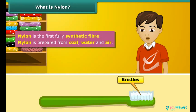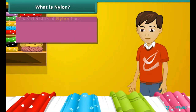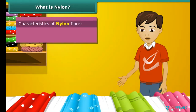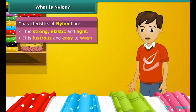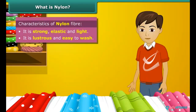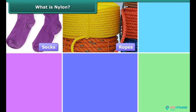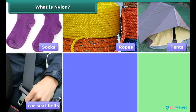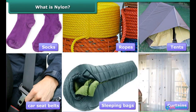Can you think why nylon is so popular for making clothes? Nylon fiber is strong, elastic, light, lustrous and easy to wash. It is used in making many articles such as socks, ropes, tents, car seat belts, sleeping bags, curtains, etc.